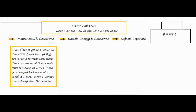The way we're going to solve this is by using the momentum formula: momentum equals mass times velocity. We're going to use it multiple times for each of the people involved, before and after the collision. Your very first step is always to draw a picture.